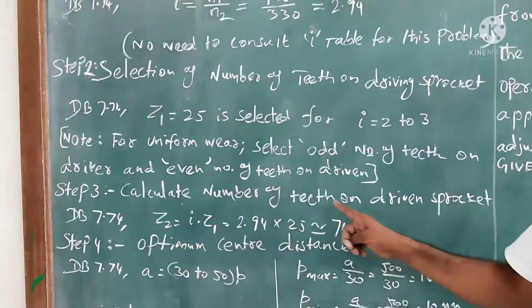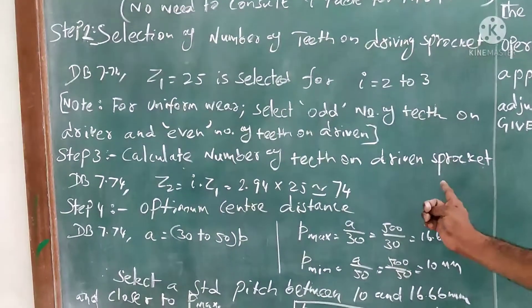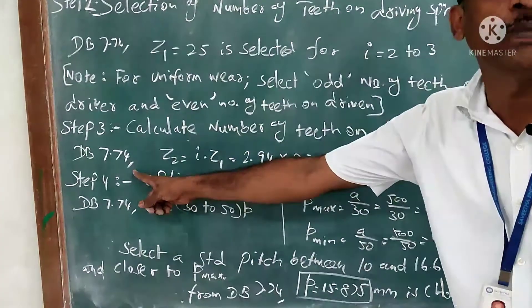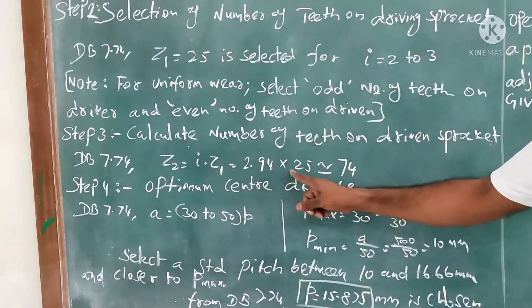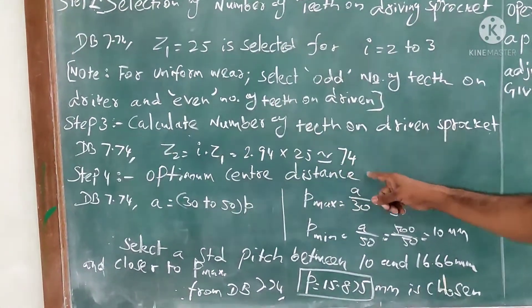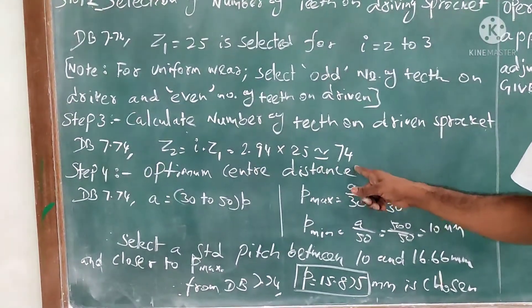Step number three: calculate number of teeth on driven sprocket. From the same data book page number 7.74, z2 = i × z1 = 2.94 × 25. We can take the even number, that's why we taken as 74.